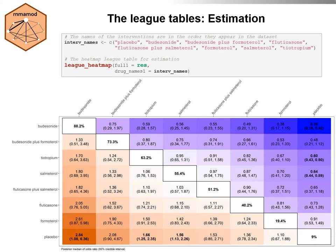Now we move on to the core visualization of the network analysis results. The league heatmap function creates the popular league table. The table is read as row versus columns and shows the posterior median odds ratio and 95% credible interval for each comparison. The interventions are sorted in decreasing order by the posterior mean SUCRA value, which appears on the main diagonal. The larger the treatment effect, the darker the color shade. The league heatmap function can also display treatment effects from two outcomes or a selected subset of interventions, which is ideal for huge networks.